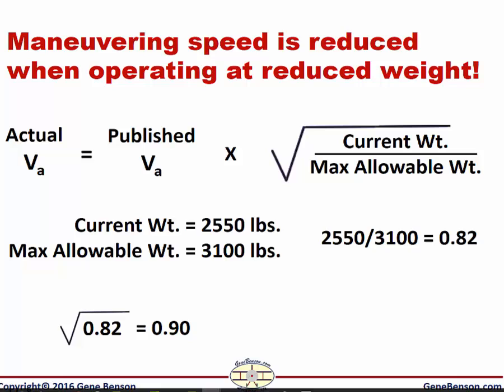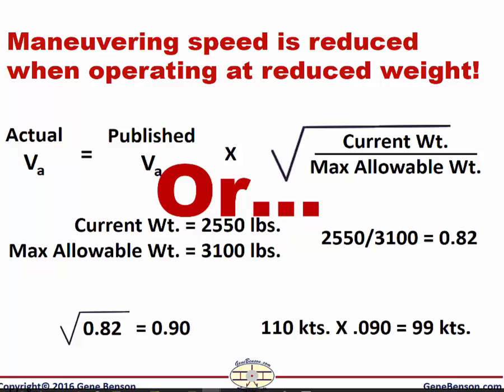We then take the square root of 0.82 and find that it is 0.90. Then we multiply our published maneuvering speed of 110 knots by 0.90 to get our calculated maneuvering speed of 99 knots.